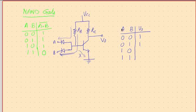Third case: A is one. If A is one, this diode gets reverse biased and doesn't conduct. But B is zero, so the current flowing through RB is drained out through this diode. The current is no more available for the base-emitter junction, and hence the transistor continues to be in the cutoff region, so the output continues to be one.